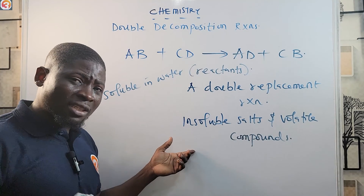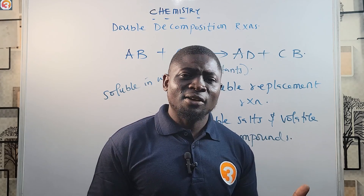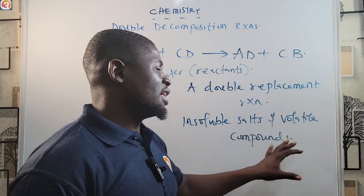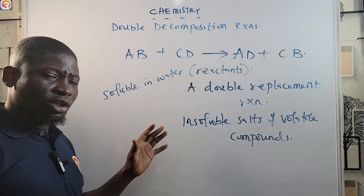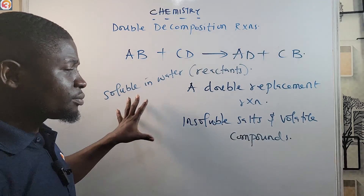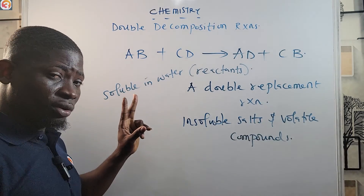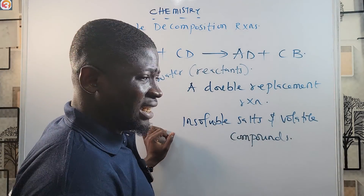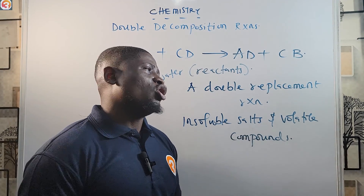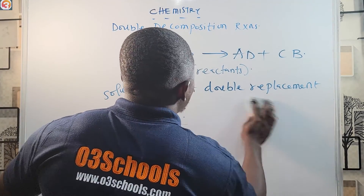In a double decomposition reaction, the two reactants are usually soluble in water, while the products formed include one that is insoluble in water and one that is soluble — either a volatile liquid or a gas. So please take note of that pattern in reactant and product solubility.